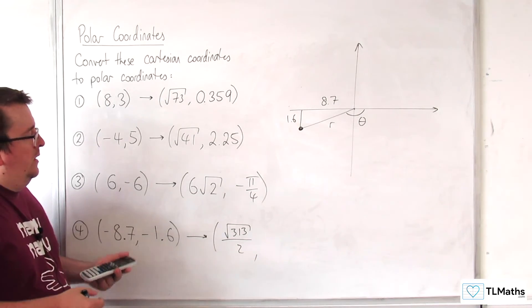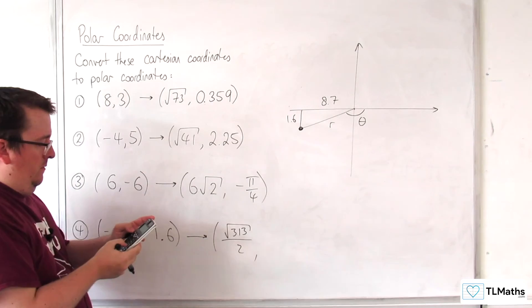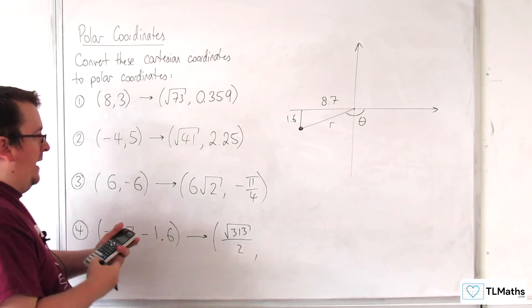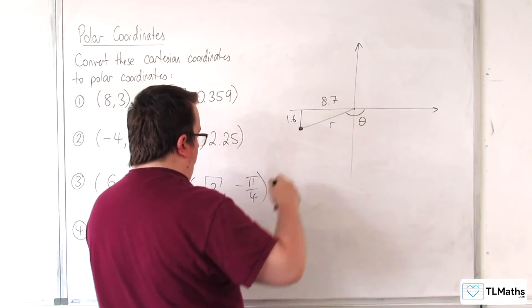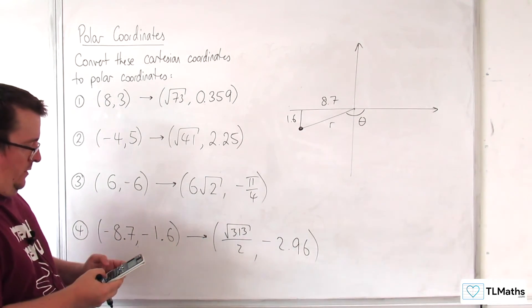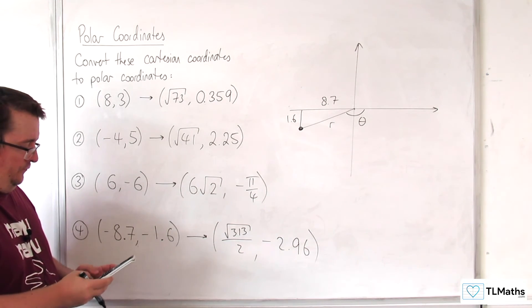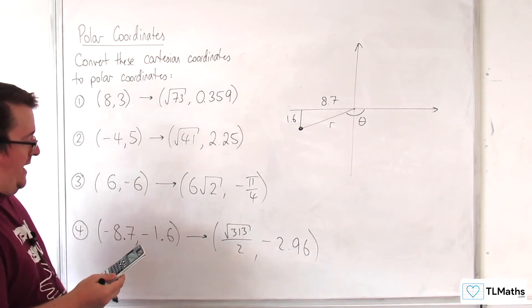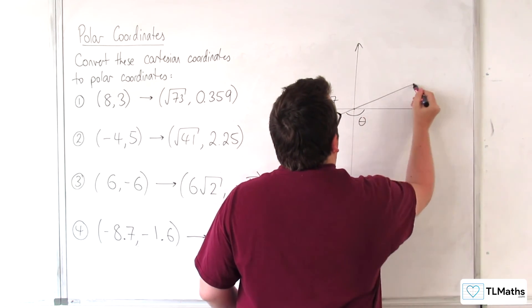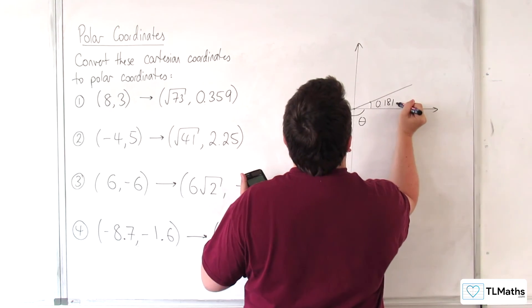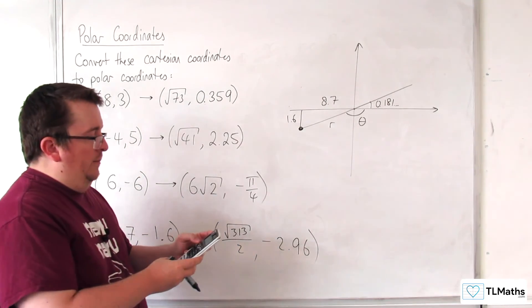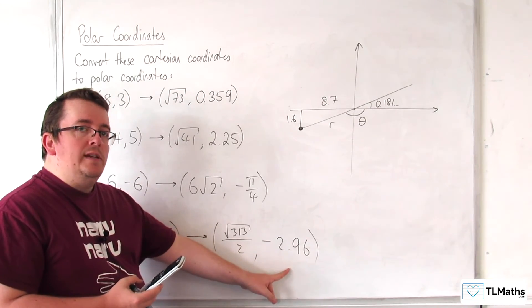Now, as for the angle, if we do pi take away inverse tan of 1.6 over 8.7, we get 2.95, so we're going this way around, so minus 2.96 to 3 significant figures. Now, if we try the inverse tan of y over x, we get 0.1818. Okay, so what that is doing is it's giving us this result here. So really we've got to subtract pi from that one, and that gets us our result here that we needed.